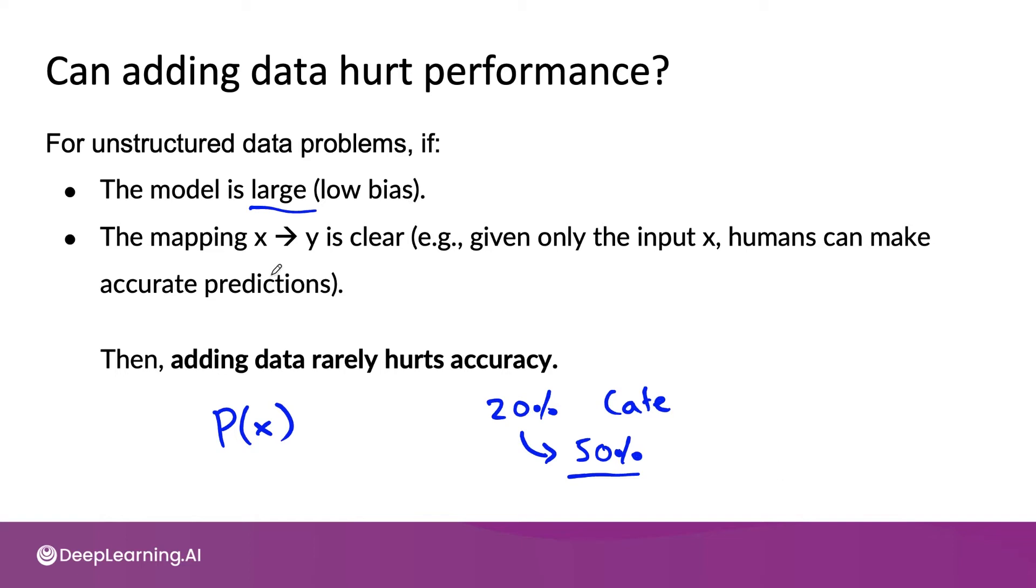The second problem that could arise is if the mapping from x to y is not clear, meaning given x, the true label of y is very ambiguous. This doesn't really happen much in speech recognition, but let me illustrate this with an example from computer vision. And this is very rare, so it's not something I would worry about for most practical problems, but let's see why this is important.